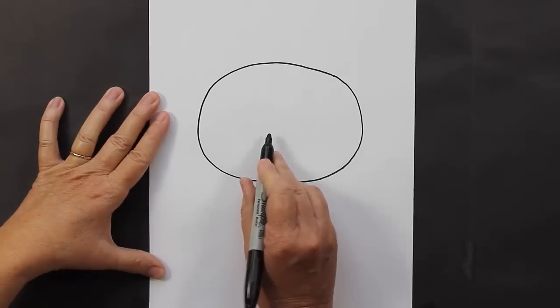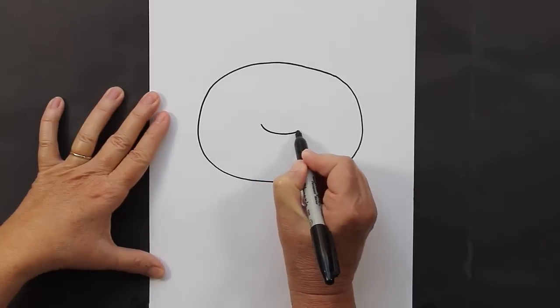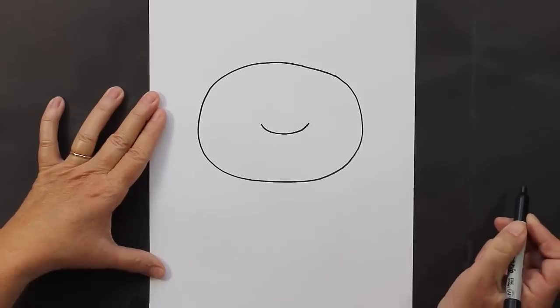Inside your oval shape, you're going to make something that almost looks like a smile, a curved line.